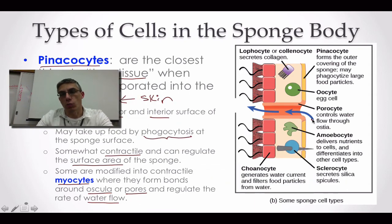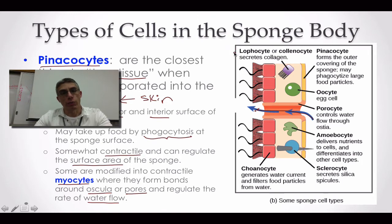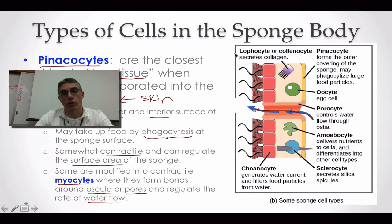As water moves in, those myocytes would work either to squeeze, close off, or open up those openings to allow more or less water in. The oscula found towards the top of the sponge — they would act to either contract, close up, or open up that large oscula, releasing more water or keeping more water in.